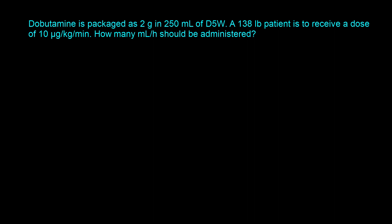The first question says dobutamine is packaged as 2 grams in 250 milliliters of D5W. A 138-pound patient is to receive a dose of 10 micrograms per kg per minute. How many milliliters per hour should be administered? So let's start by really analyzing this question.